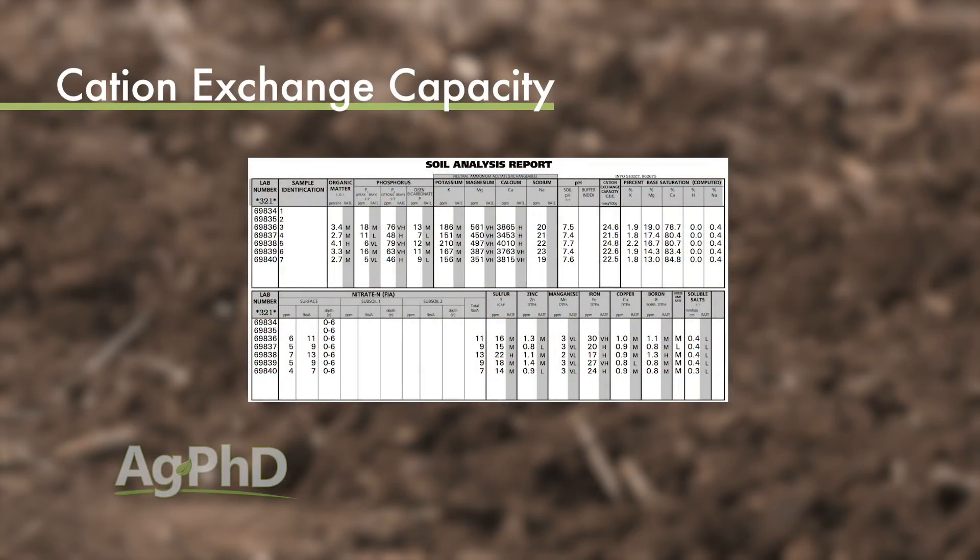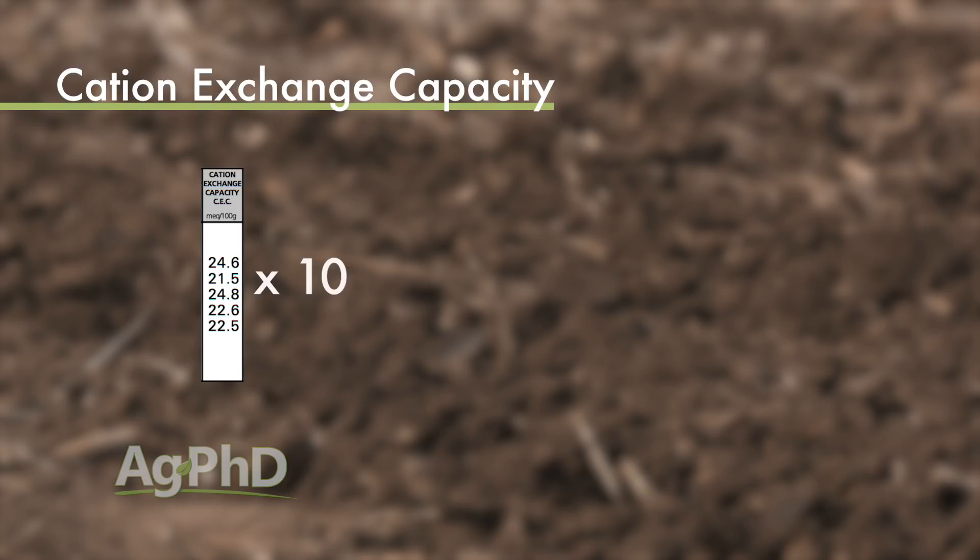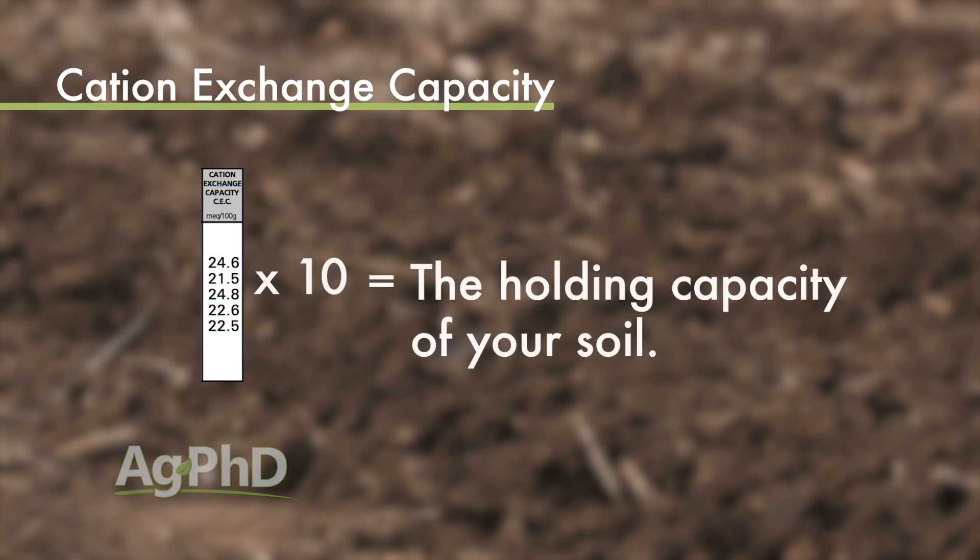Here's a simple measurement you can use: cation exchange capacity. Get that on your soil test, then multiply that number times 10. That'll tell you the rough holding capacity of your soil. Is it going to be exact? No, but it'll at least give you a rough idea — a lot better than saying 'I have heavy ground' or 'I have light ground.'